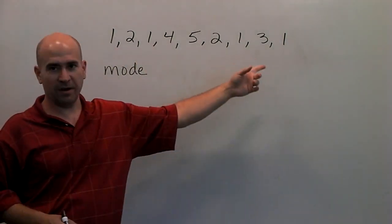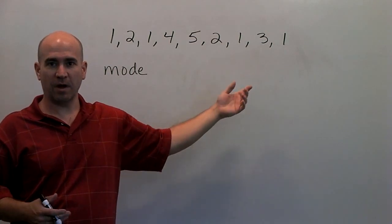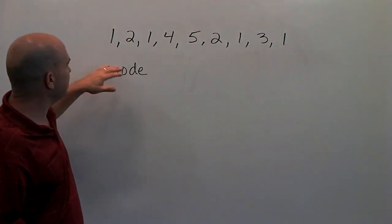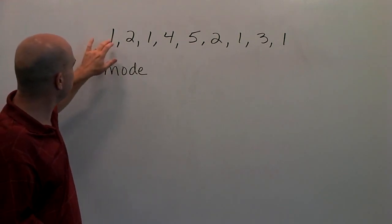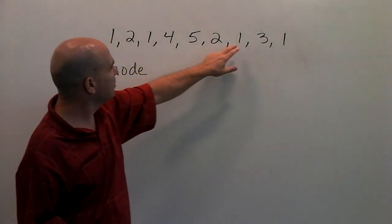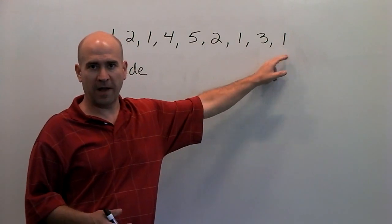which number occurs the most often. If we look at these values and count the number of values, we'll see that there's one, two, three, four values of one,